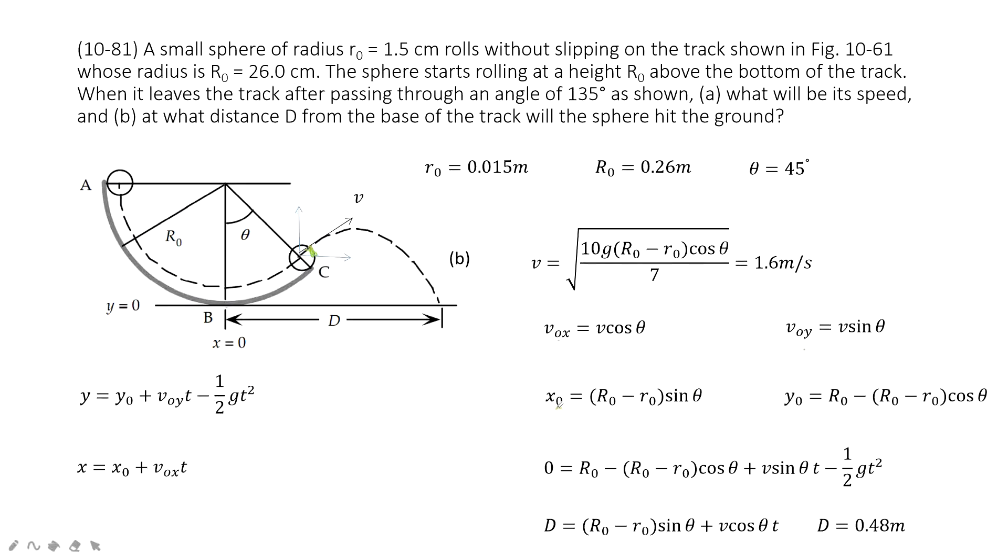Then the initial position for x. So initial position for x is this one. This one is the length for this side. The length for this side is capital R minus small r sine theta.